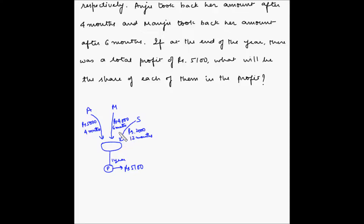While Anju, Manju and Sanju were discussing who should get how much from this profit, Manju suggested splitting the amount into three equal parts. Anju objected, saying she invested more money and should get more. Then Sanju pointed out that both Anju and Manju took out their money after four and six months respectively, but he kept his money invested for the full 12 months.